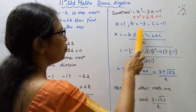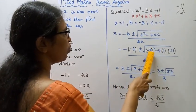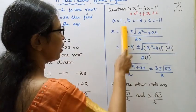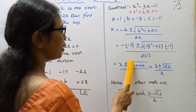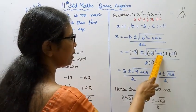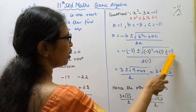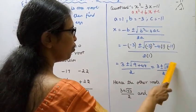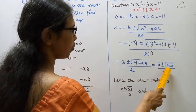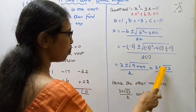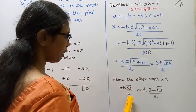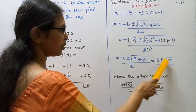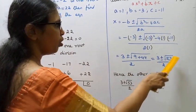Using the quadratic formula: minus b plus or minus root of b square minus 4ac, divided by 2a. This gives minus 3 plus or minus root of 9 plus 44, which is root 53, divided by 2. So the other roots are 3 plus root 53 by 2 and 3 minus root 53 by 2.